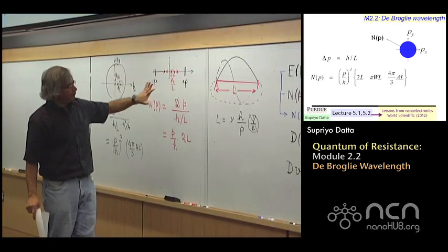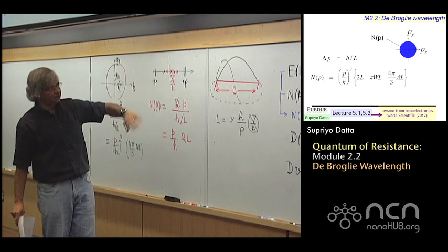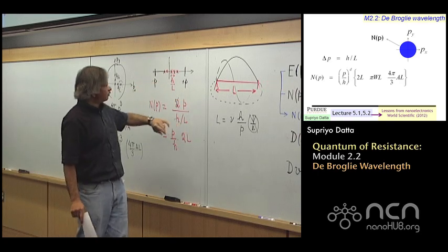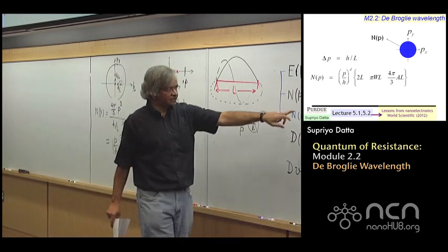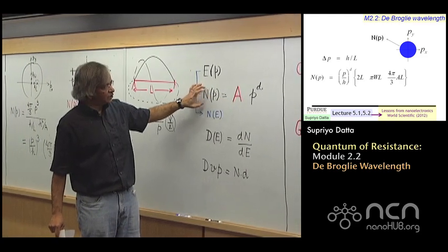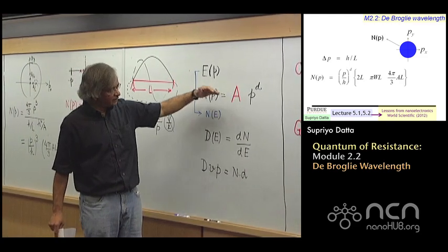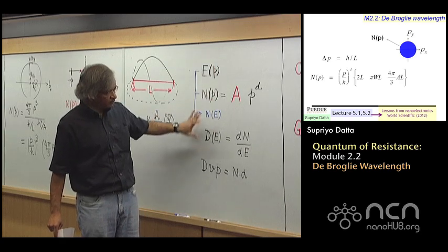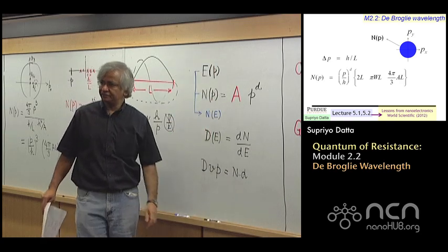But for our purpose then, the main point I wanted to get across in this module is just how you write that constant that describes the total number of states, because once you have this, then the rest follows in terms of how you obtain density of states.